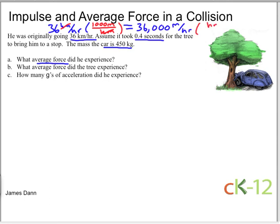If I do this, I get 10 meters per second. 36,000 divided by 3,600 is 10. Great. So now we know the speed in terms of meters per second.